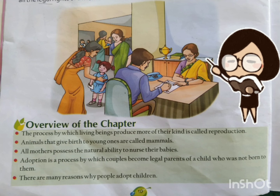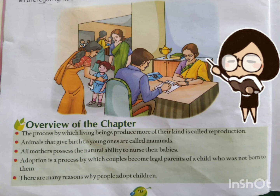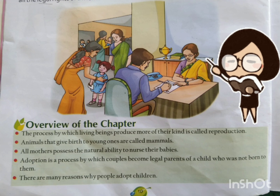Let's summarize our chapter. The process by which living beings produce more of their kind is called reproduction. Animals that give birth to young ones are called mammals. All mothers possess the natural ability to nurse their babies. Adoption is a process by which couples become legal parents of a child who was not born to them. There are many reasons why people adopt children.